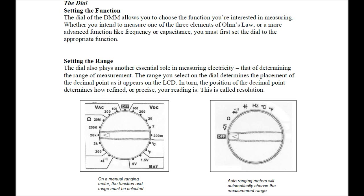Setting the range: the dial also plays another essential role in measuring electricity — that of determining the range of measurement. The range you select on the dial determines the placement of the decimal point as it appears on the LCD. In turn, the position of the decimal point determines how refined or precise your reading is. This is called resolution.